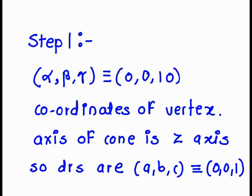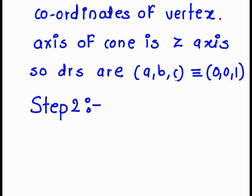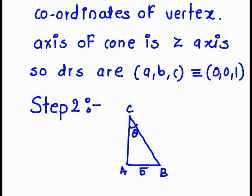Now we need to find the semi-vertical angle. To find the semi-vertical angle, we use the Pythagorean theorem. From the diagram we observe a right-angle triangle. Consider vertices A, B, and C with angle theta at C. The diameter is 10 so the radius AB is 5, and the height AC is 10 since the vertex coordinate is (0, 0, 10).